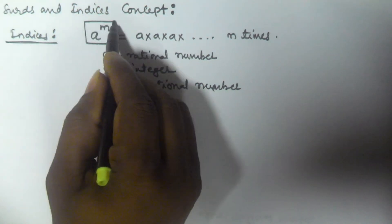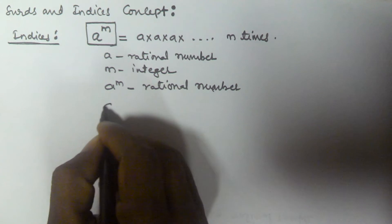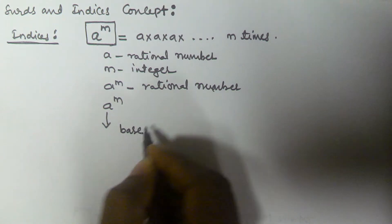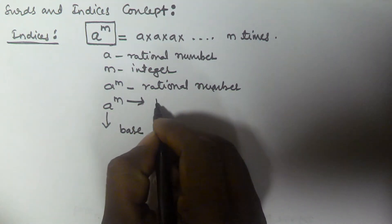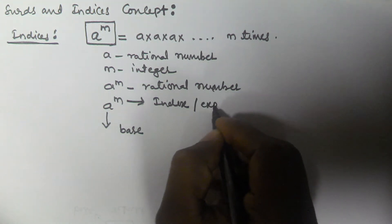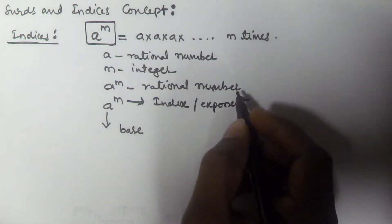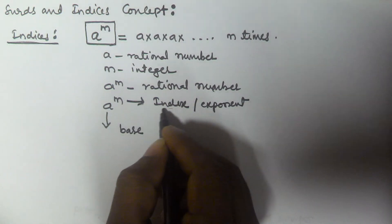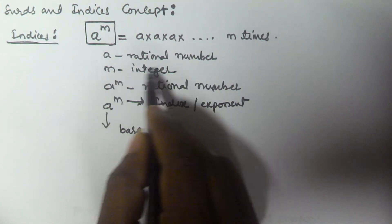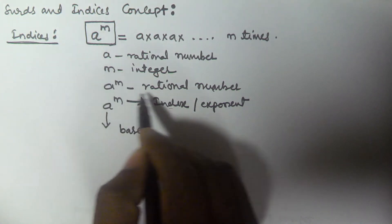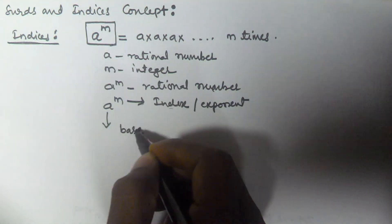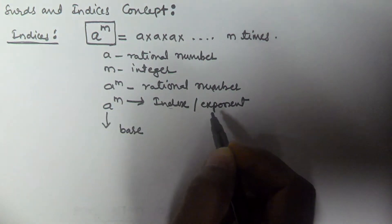In a to the power of m, a is called the base, and m is called the index or exponent. Indices is the plural form of index. So if the number is in the form of a to the power of m, where a is a rational number, m is an integer, and the result a to the power of m is a rational number, then that is called an index. In a to the power of m, a is the base and m is the index or exponent.